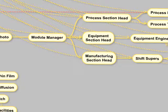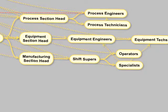So the process section head, for example, had process engineers reporting to them and process technicians. And also you can see this little arrow here. Process technicians reported on what they call a dotted line to the process engineers. So the process engineers would work with the process technicians and direct their priorities on a day-to-day basis. And they also interacted greatly with the shift supervisors, with the operators and with the specialists.